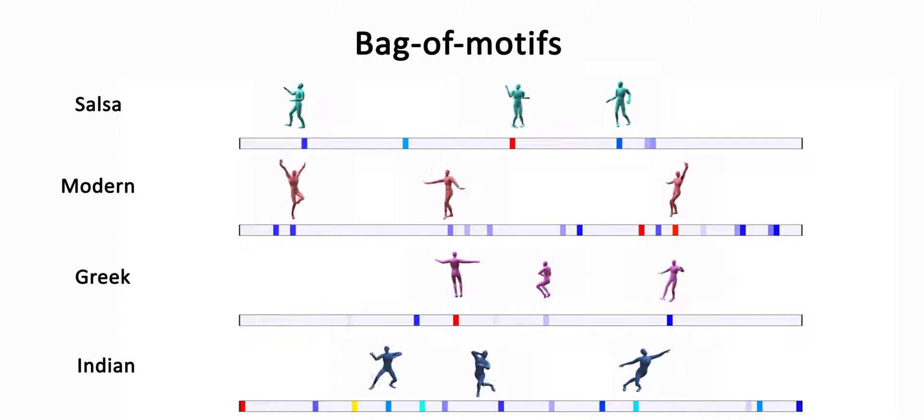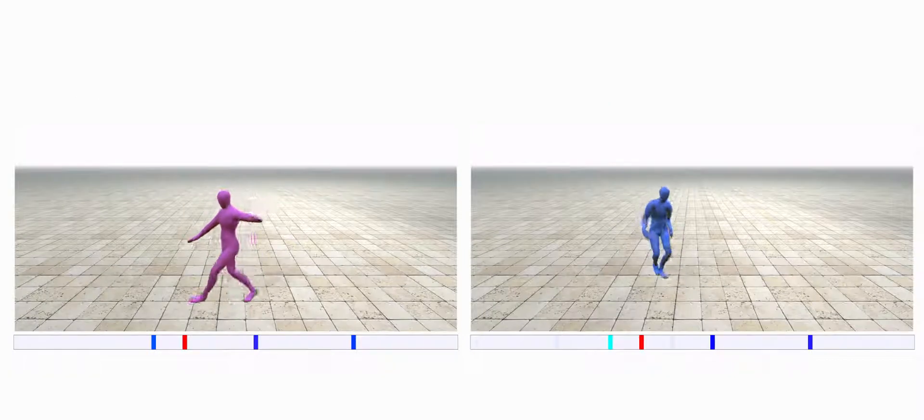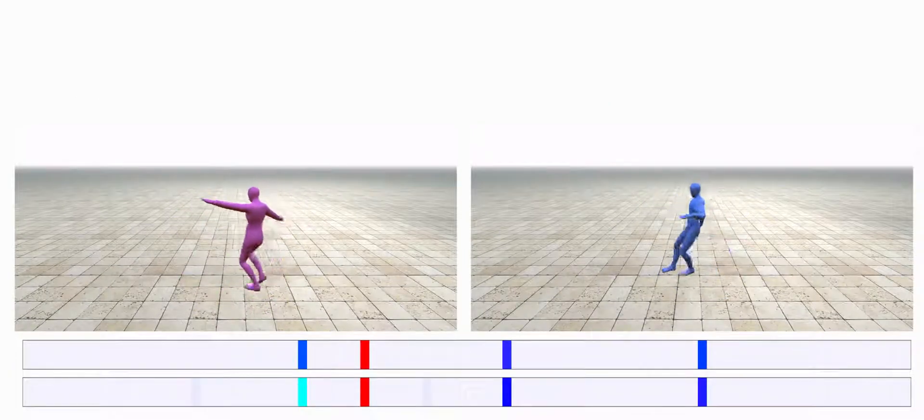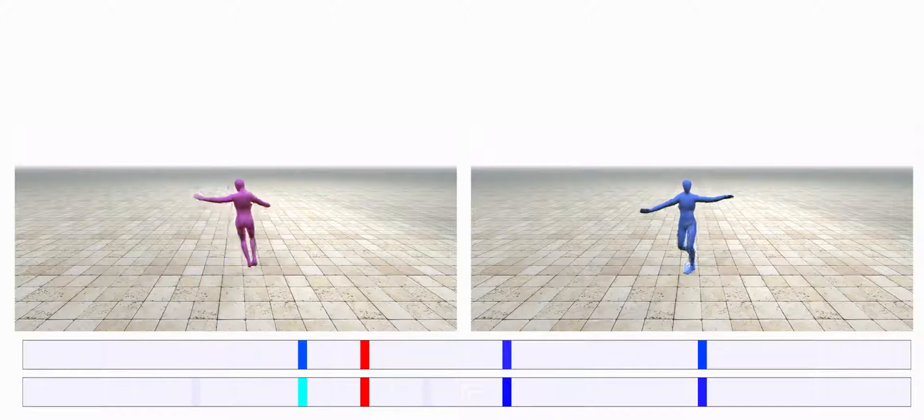The motion signatures themselves are defined as a bag of motifs. Now, two motion sequences are considered similar if their signatures are similar, which means that they have a similar distribution of motion motifs.